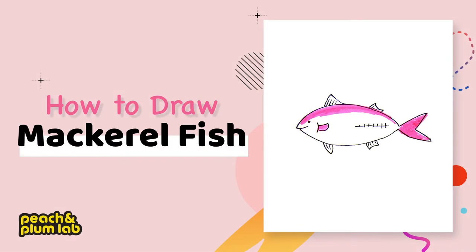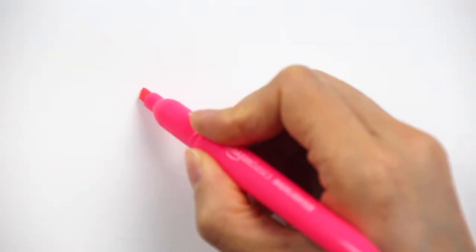Hello everyone, this is Lee from Peach and Plum Lab, a place for creative kids to learn and grow. Today I'm going to show you how to draw a kind of fish called mackerel. The overall shape looks like an olive but much more pointy, and their tails are also very pointy.